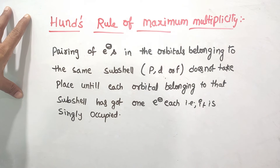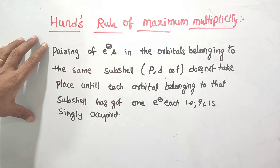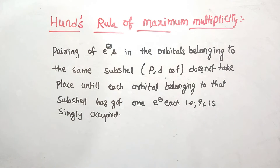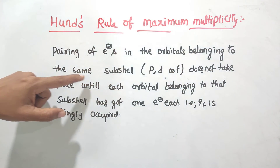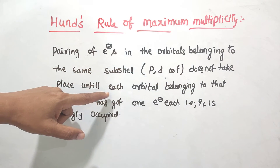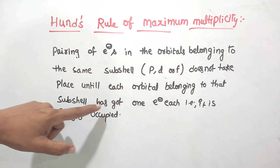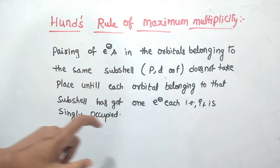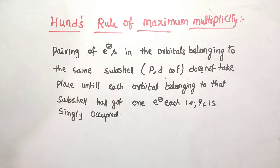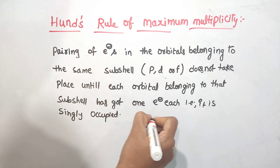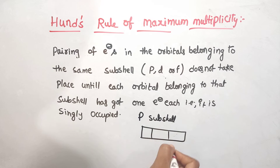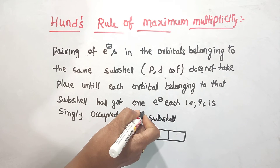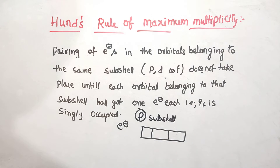Next is Hund's Rule of Maximum Multiplicity. This is a very simple rule. Electron pairing in the same sub-shell does not take place until each orbital belonging to that sub-shell has got one electron each — that is, singly occupied. For example, take the P sub-shell with 3 orbitals: 1, 2, 3.